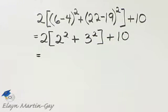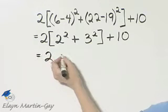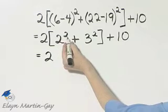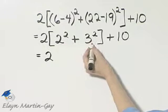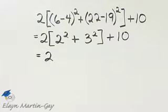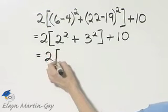Now look again. I still have to work within my set of brackets, so I have 2 times, and within that I will square 2 and square 3, and then add those two numbers. So there's my bracket.